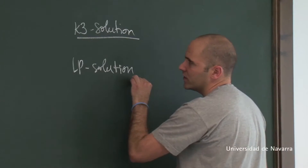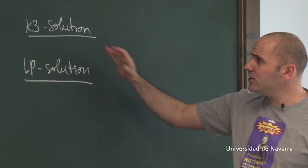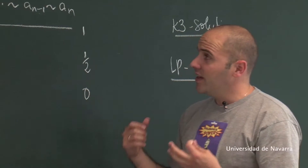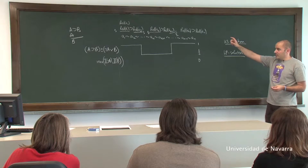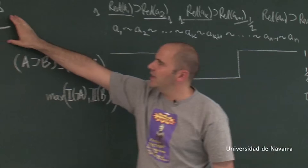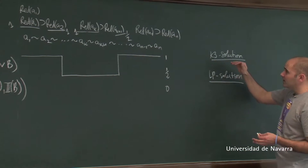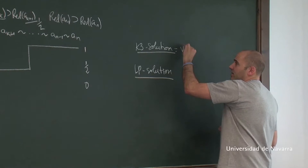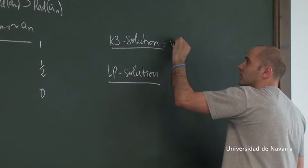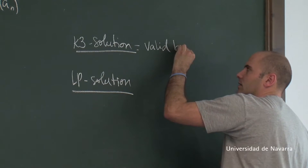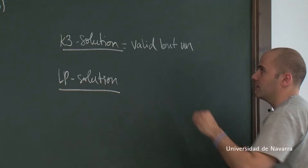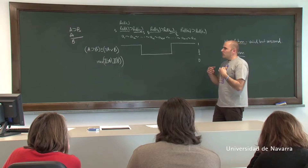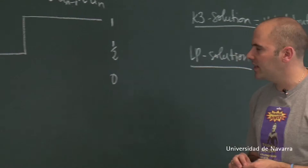We have two different solutions in K3 and in LP. In the case of K3, modus ponens is K3-valid, as you can check using the tableaux with these logics. So someone holding this logic would say that the reasoning used in the paradox is valid, but the argument is unsound. Although the reasoning is valid, some premise is not true. That's the K3 solution.